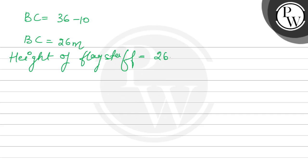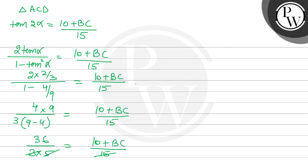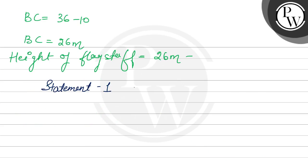BC = 26 meters. But Statement 1 says the height of the flagstaff is 30 meters. Since 26 ≠ 30, Statement 1 is false. Now let's check Statement 2.